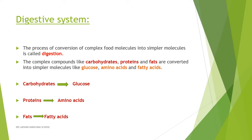In digestion, we eat carbohydrates, proteins, and fats. For example, carbohydrates are broken into glucose, proteins into amino acids, and fats are also converted. Do you know why this conversion takes place? This conversion takes place because the cells in our body cannot absorb complex food molecules. That is why this conversion takes place.